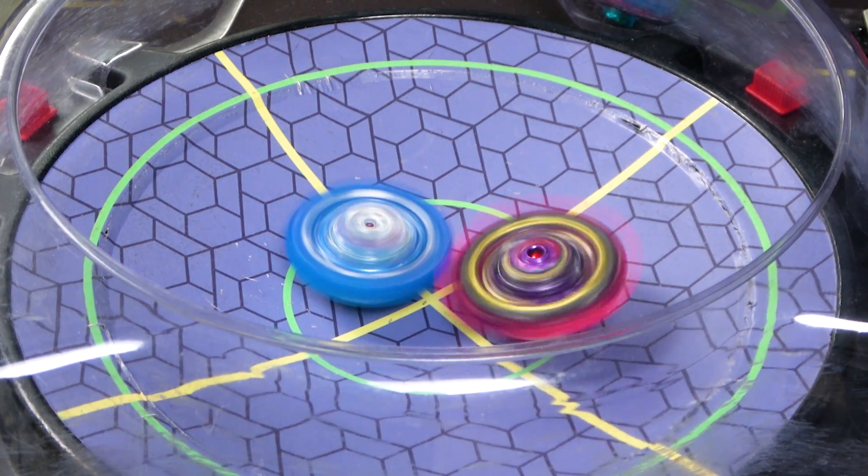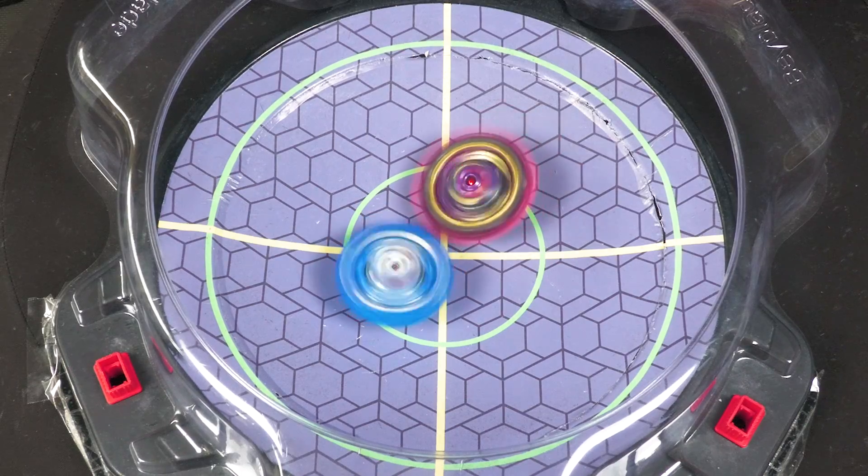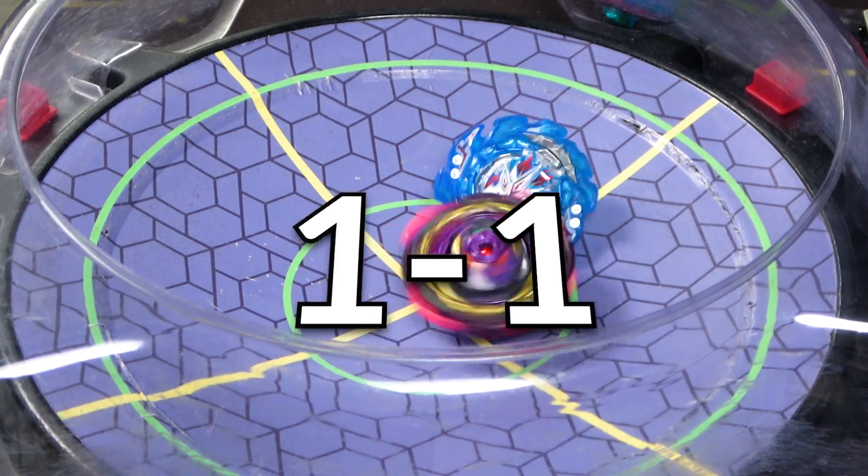I guess Helios might stand a decent chance. At least better than a lot of other stock lefts. Obviously, bearing Mobius can just sometimes, you know, orangey. Same thing with bearing Drift. So yeah. All right. Helios is a worthy contender, it seems.